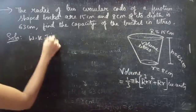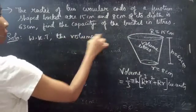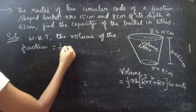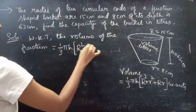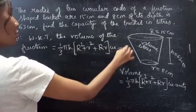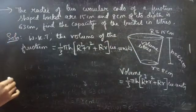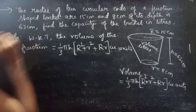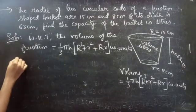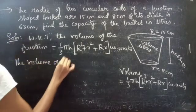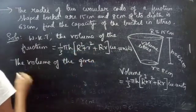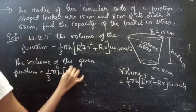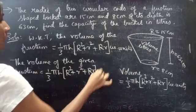We know that the volume of the frustum equals 1/3 × π × h × (R² + r² + R·r) in cubic units. Now we are going to find the volume of the given frustum since we have the values of capital R, small r, and height. The volume of the required frustum equals 1/3 × π × h × (R² + r² + R·r) cubic units.